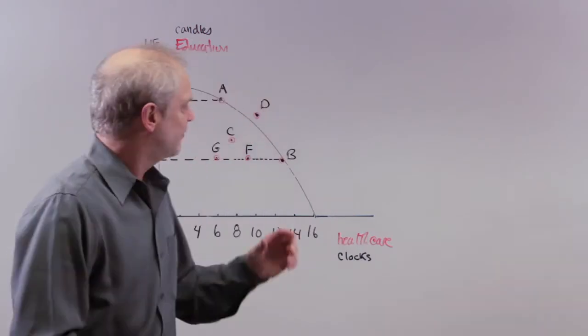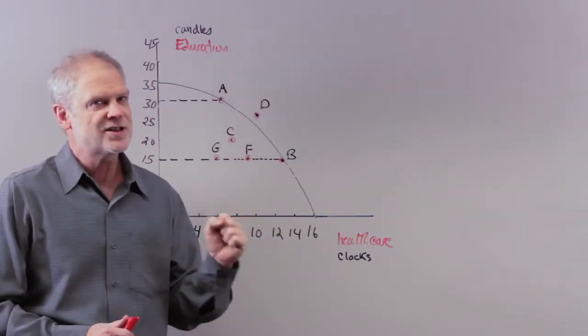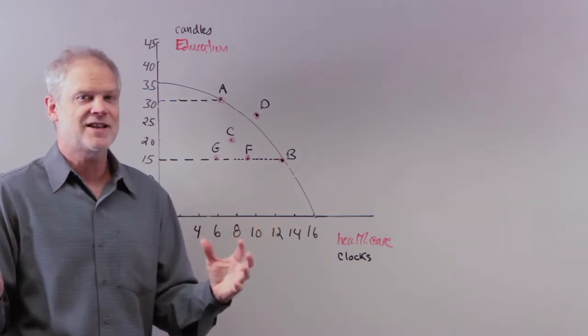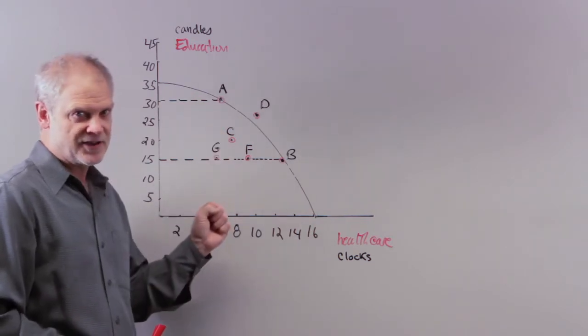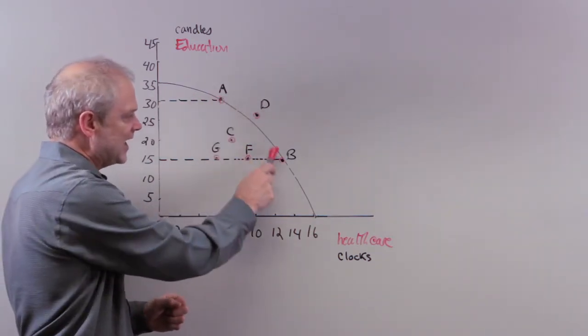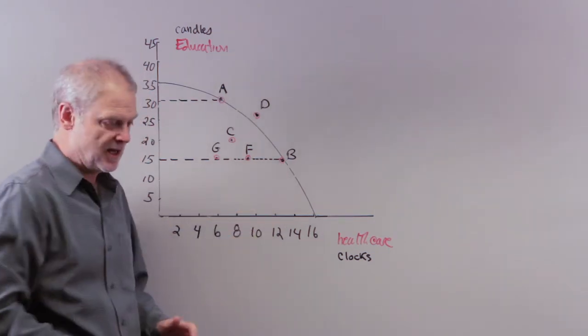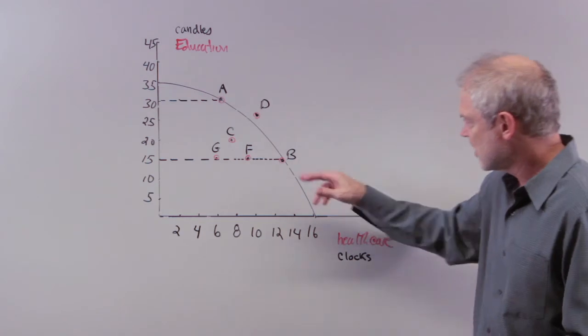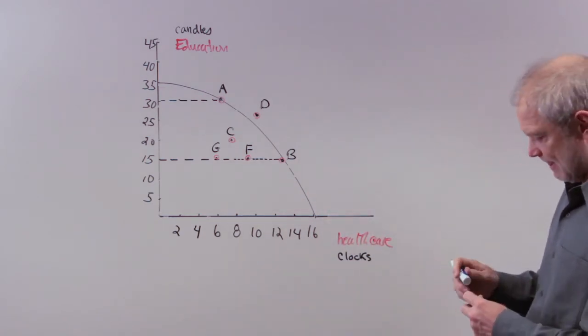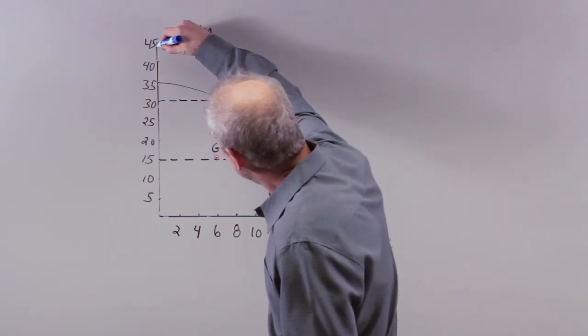Anyway, the production possibility frontier is a way to emphasize those trade-offs. There's no such thing as a free lunch. It's a classic economic expression. And what that means is, if you want more health care, something else has to give. You want to go from point A to point B, you have to give up something in A to get B. The only way you can get more health care, or in this case, more of B, is if you have some improvement in your technology.